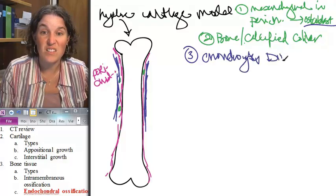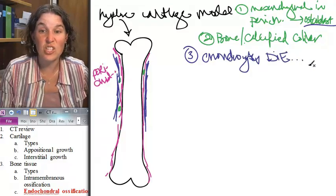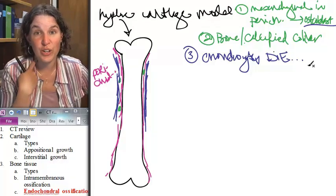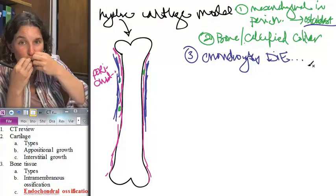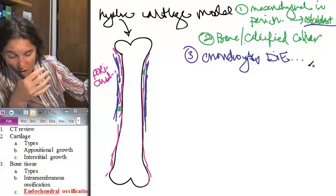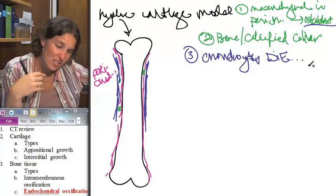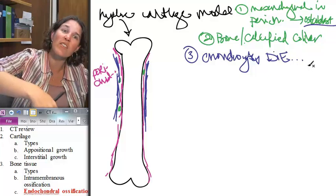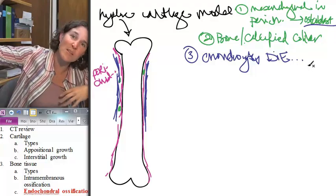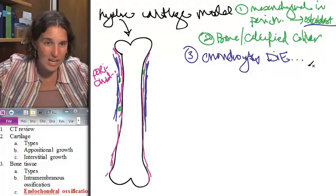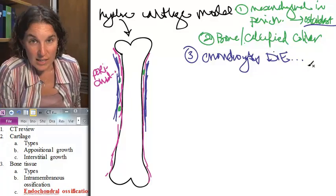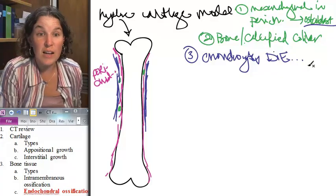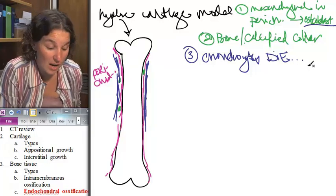Chondrocytes die, and they don't just keel over. They die this slow, painful chemical barfing happening everywhere. They're sending out messages. They're like, dude, we're starving in here. I'm drowning in my own crap. It's all bad. So, they start sending out these messages, like, somebody's got to come to the rescue. Somebody's got to help us.